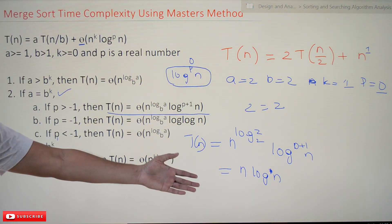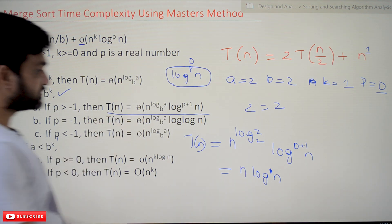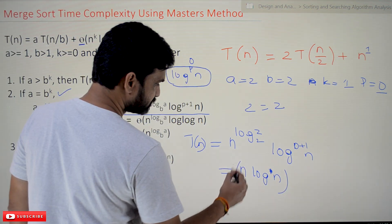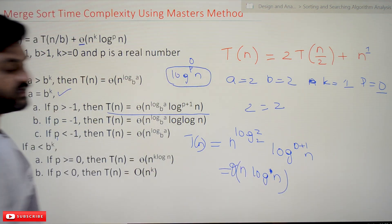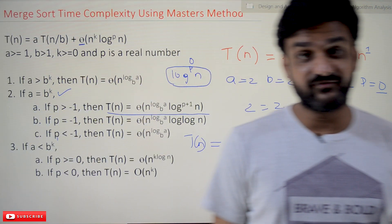So we have seen that already. The efficiency of merge sort is—and here the symbol is theta—θ(n log n). So this is the efficiency of merge sort, and we have solved it by using Master's method.